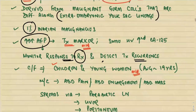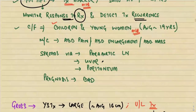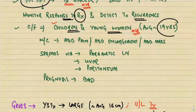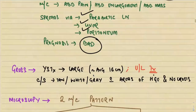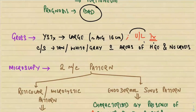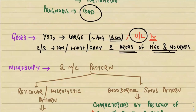All germ cell tumors are unilateral and occur in young patients. Yolk sac tumor occurs in children and young women, with an average age of approximately 19 years. Most commonly presenting with abdominal pain, enlargement, or abdominal mass. It spreads via para-aortic lymph nodes to the liver and peritoneum. The prognosis is poor. These are large unilateral tumors around 16 centimeters in diameter with a tan-white or gray cut surface containing areas of hemorrhage and necrosis.